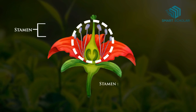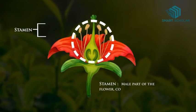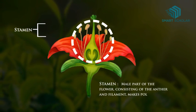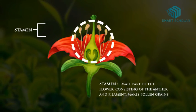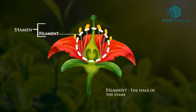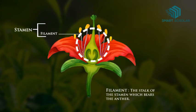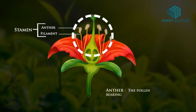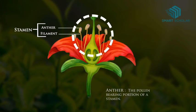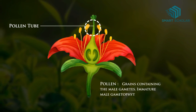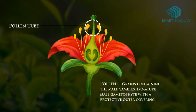Stamen: the male part of the flower, consisting of the anther and filament, makes pollen grains. Filament: the stalk of the stamen which bears the anther. Anther: the pollen-bearing portion of a stamen. Pollen: grains containing the male gametes; an immature male gametophyte with a protective outer covering.